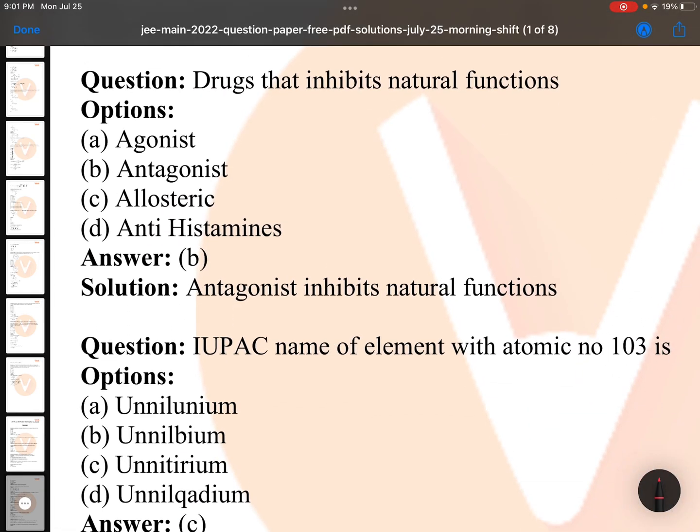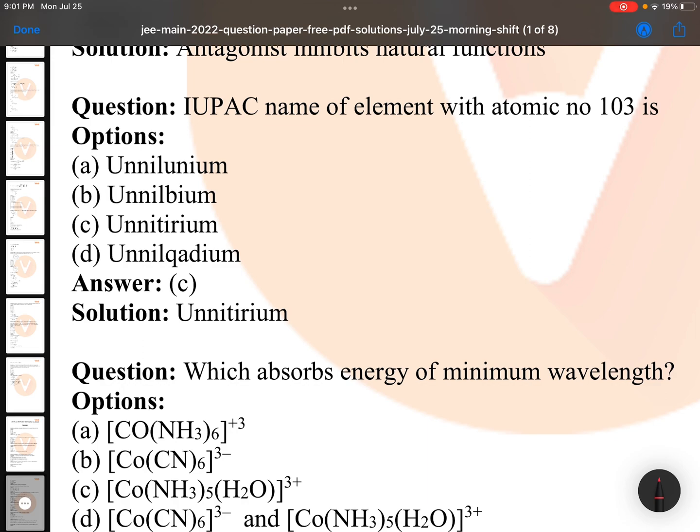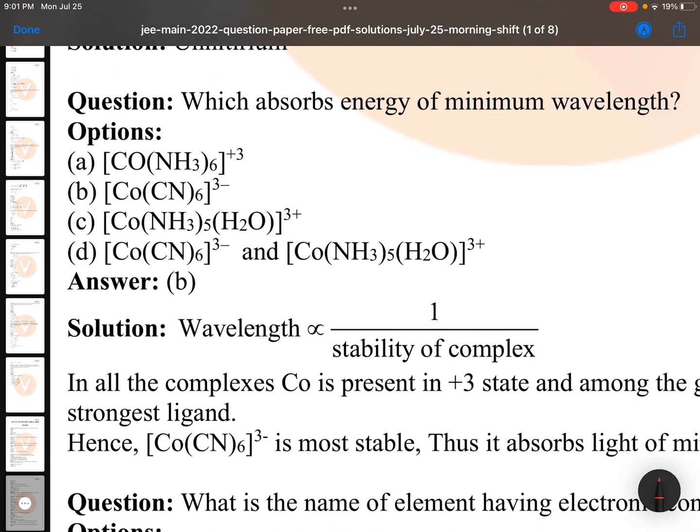Drugs that inhibit natural functions is antagonist. Direct question again, chemistry in everyday life, NCERT. IUPAC name of element with atomic number 103. NEET exam question, it was 119, now it is 103. Un-nil-trium, periodic table, direct question.